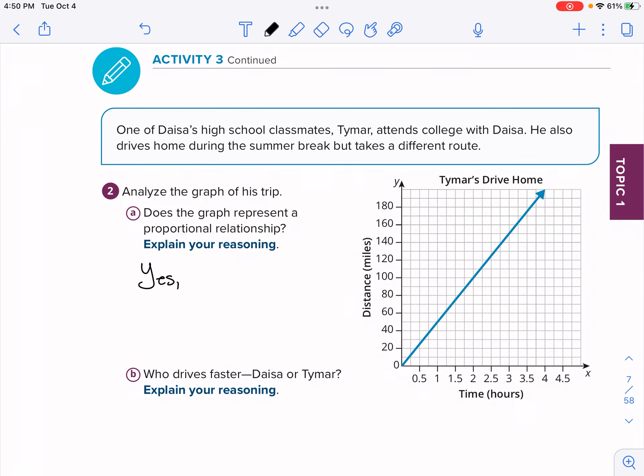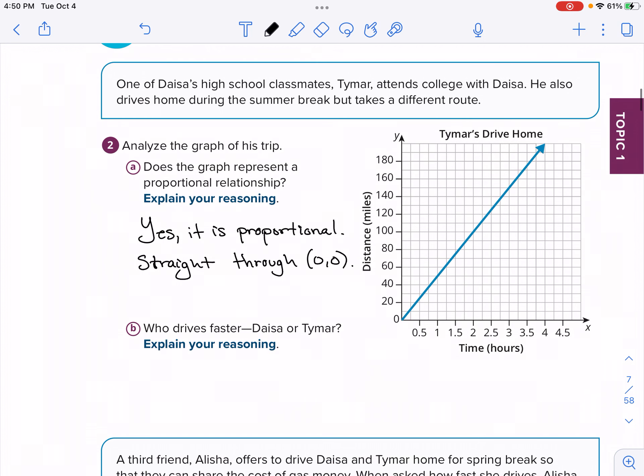Now for Tamar, it's not represented as a table. And that's part of our learning goal is that we're comparing different representations. So two, analyze the graph of his trip. Does the graph represent a proportional relationship? Is it a straight line? So first of all, we're going to say yes. It is proportional. And then a brief reason why? The reason is because it is a straight line through the origin, through zero, zero.